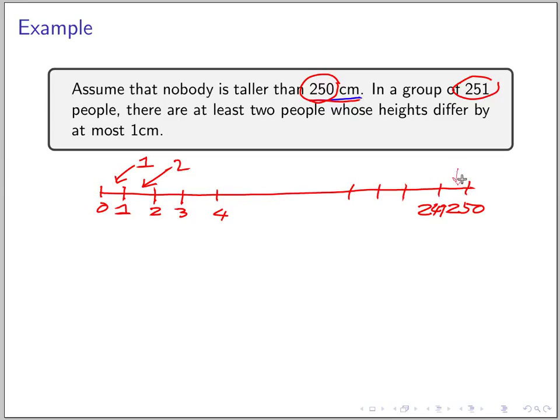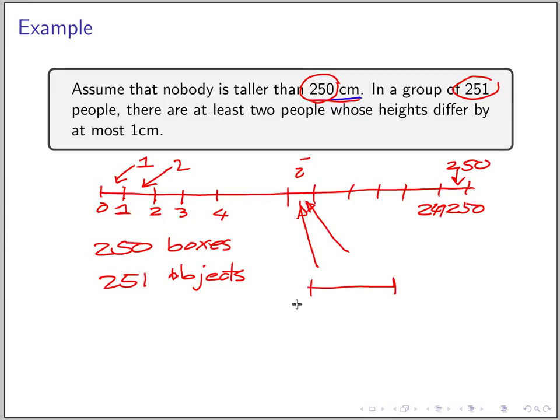and so on, this is box number 250. Now from the pigeonhole principle, we have 250 boxes and 251 objects, so at least two must fall in the same box. Suppose two people fall into the i-th box. We know that the height of people who fall into the i-th box is between i minus 1 and i centimeters.